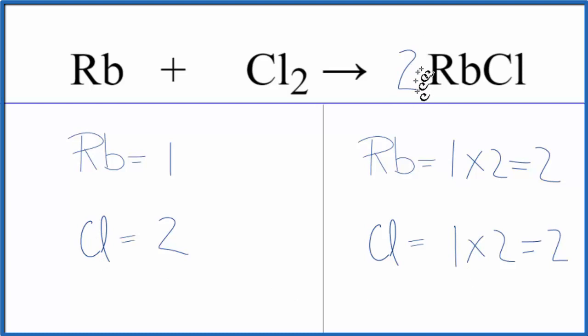When we have a coefficient in front of a compound it goes to all the elements in the compound. On the product side we just need to get two rubidiums here to balance these two here.